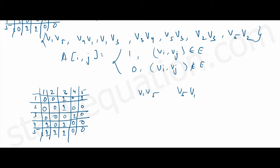Continuing: V5→V3 is the same as V3→V5, so we mark that 1. V1→V3 is the same as V3→V1, so we mark that 1. V5→V2 is the same as V2→V5, so we mark that 1. V2→V3 is the same as V3→V2, and V4→V1 is the same as V1→V4 — we mark all of these as 1.